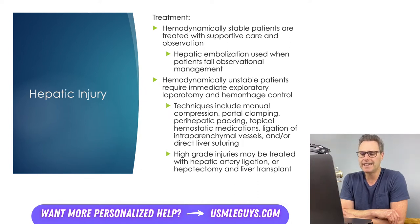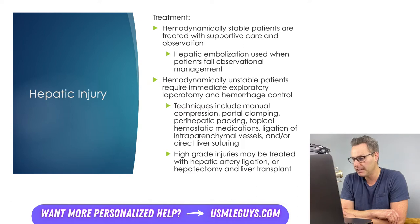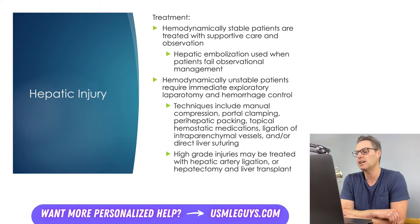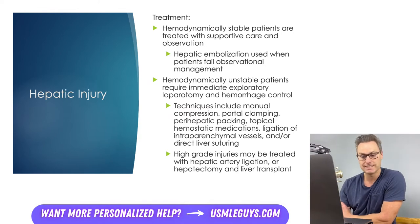The progression of interventions increases in a stepwise fashion, with initial management including manual compression of the liver between two hands, followed by packing and clamping of vessels. If this is not adequately controlling the bleed, topical hemostatic medications, ligation of intraparenchymal vessels, and/or direct liver suturing would need to be performed. In high-grade injuries, hepatic artery ligation may be required, as well as possible hepatectomy, and then, of course, liver transplant.